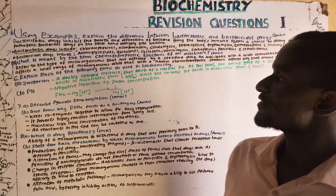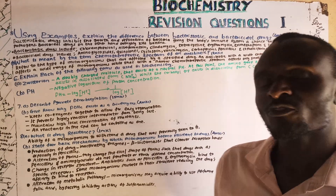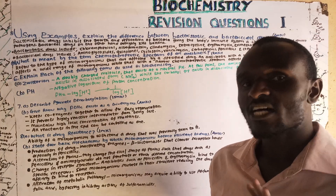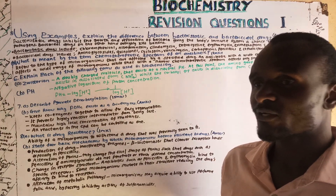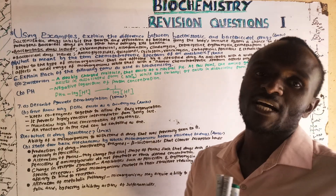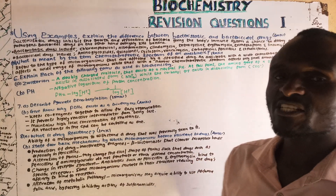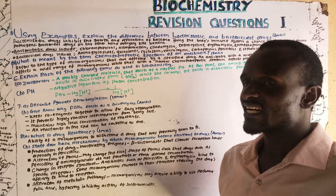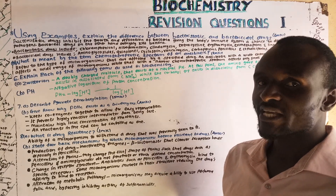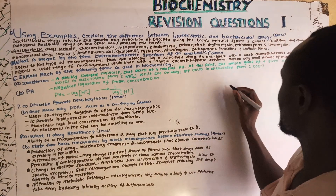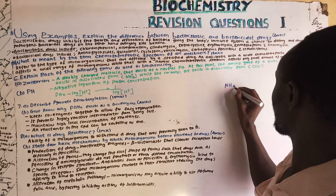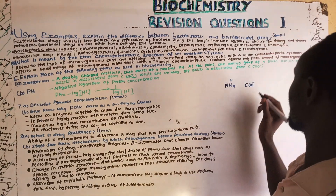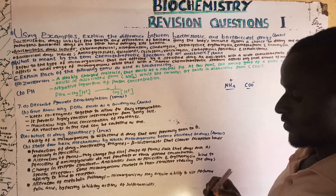The next term to explain is zwitterion. A zwitterion is a doubly charged molecule. When referring to amino acids, it refers to a doubly charged amino acid that normally exists at a neutral pH, where the amino group exists in an associated form while the carboxyl group exists in a dissociated form.